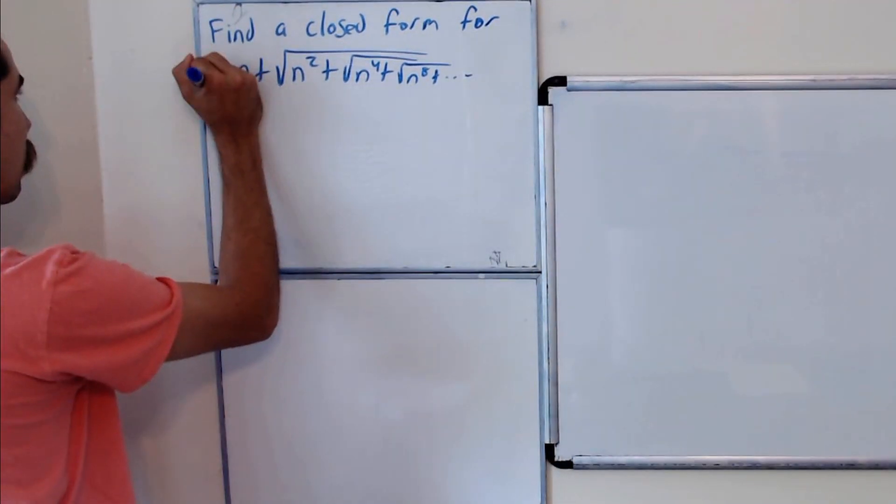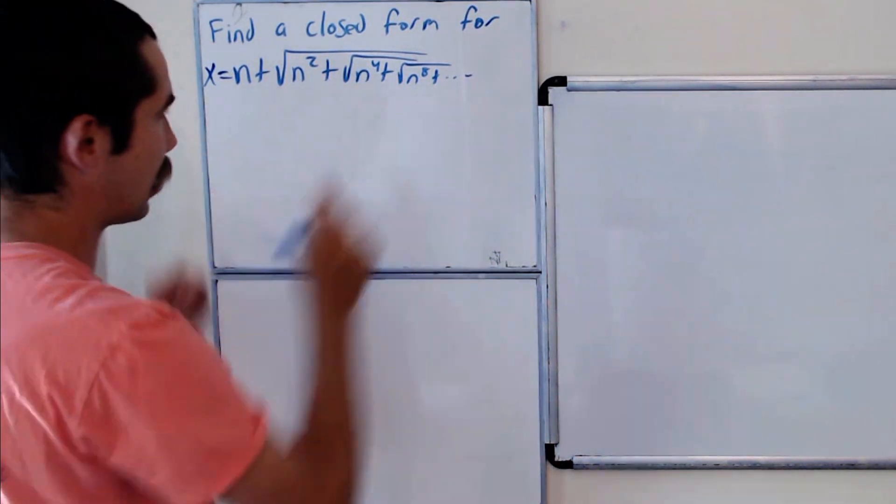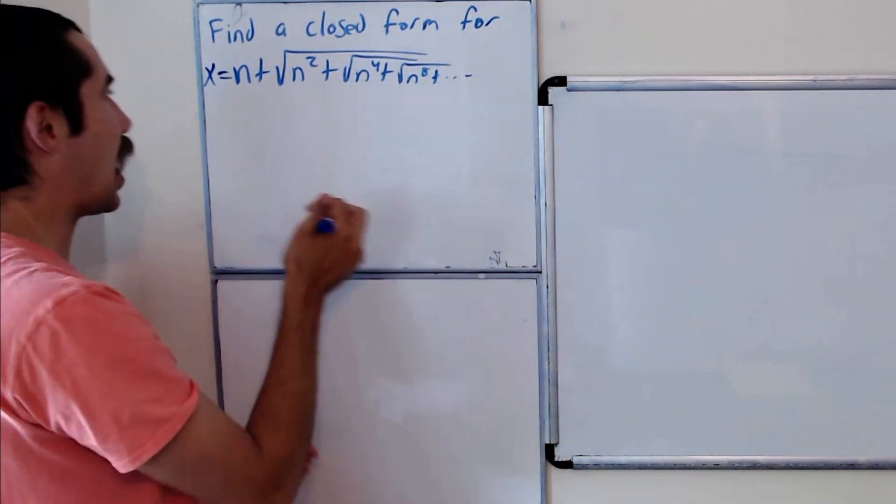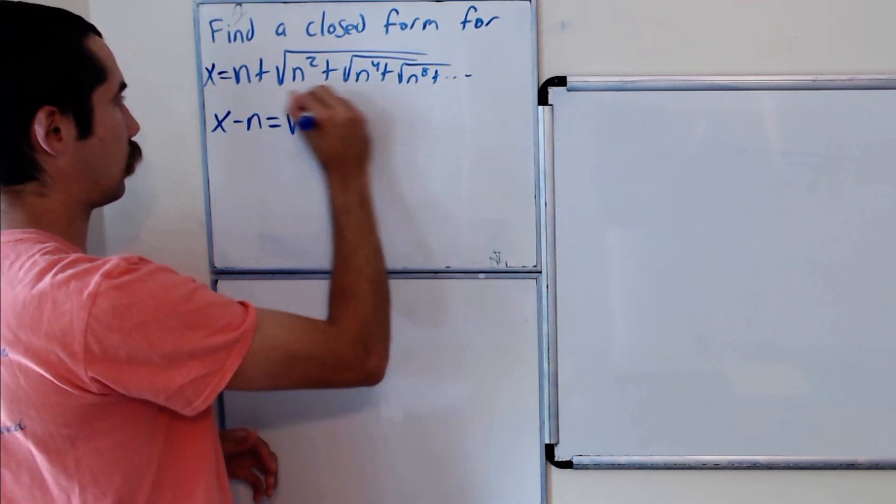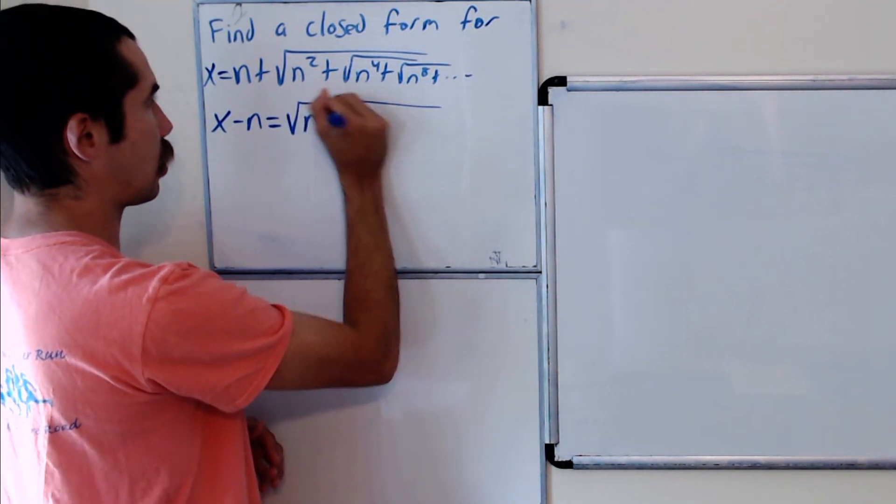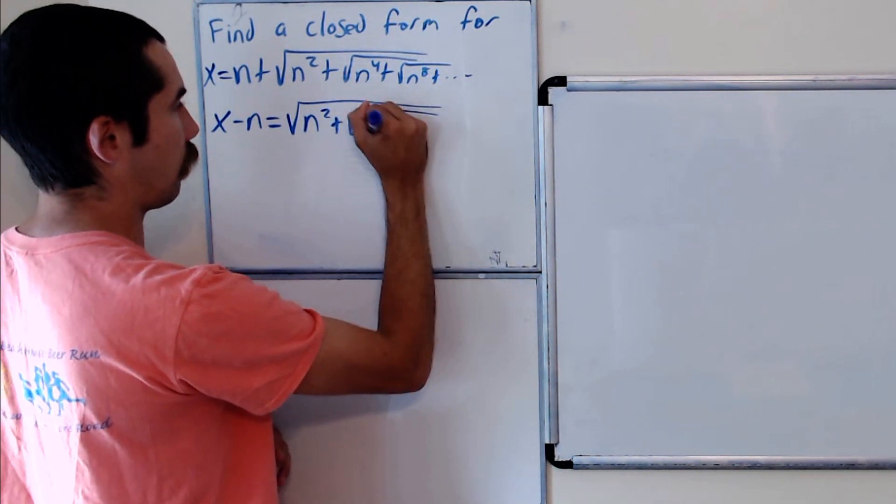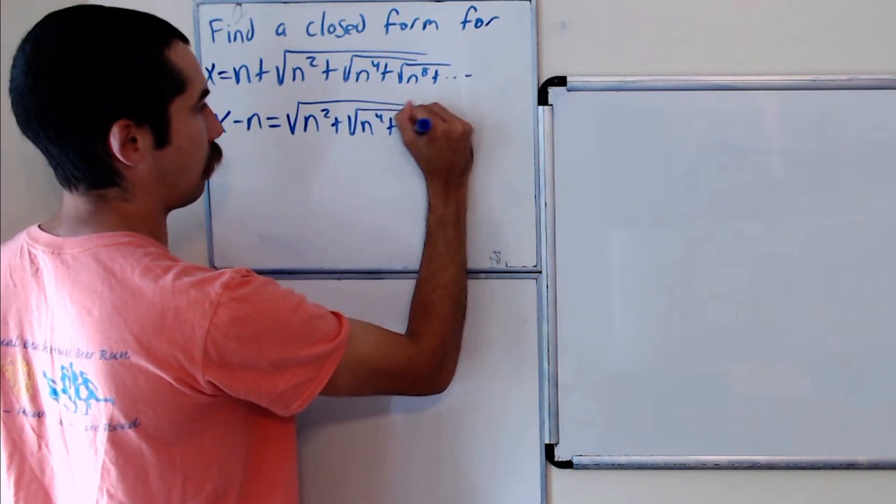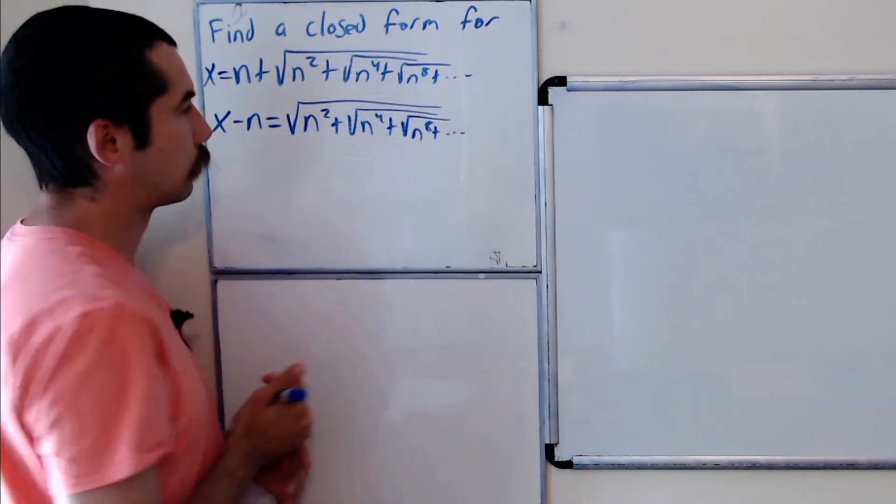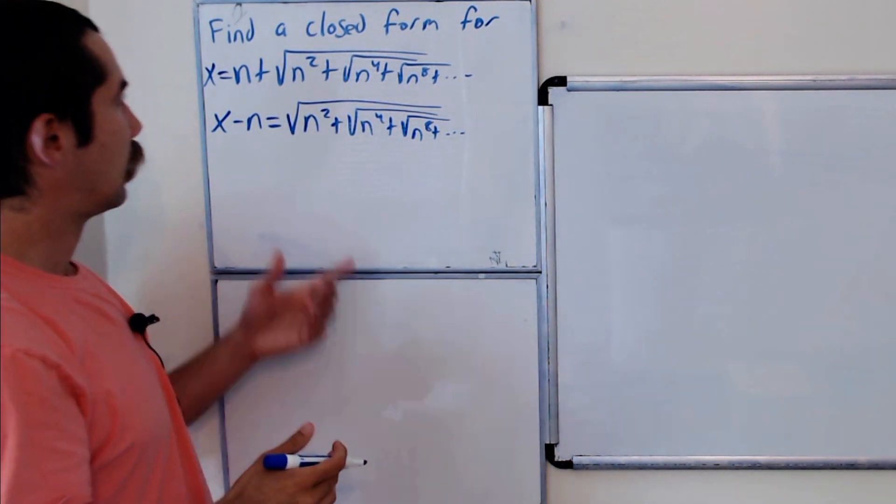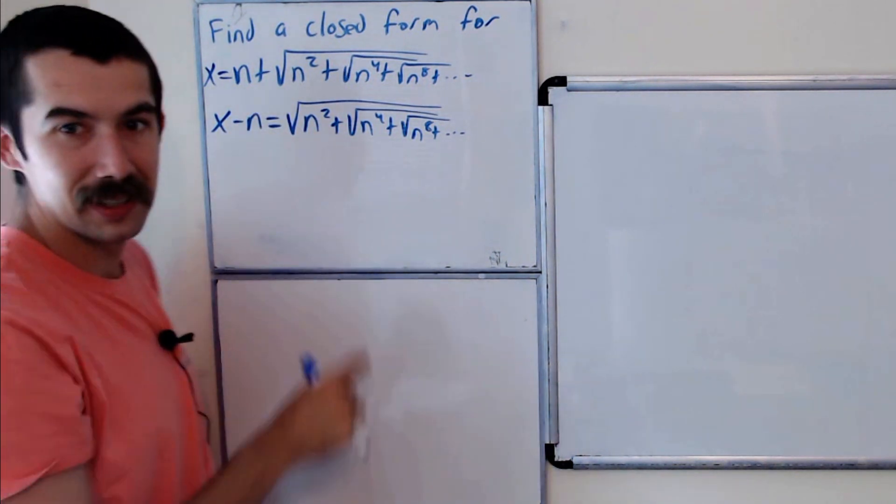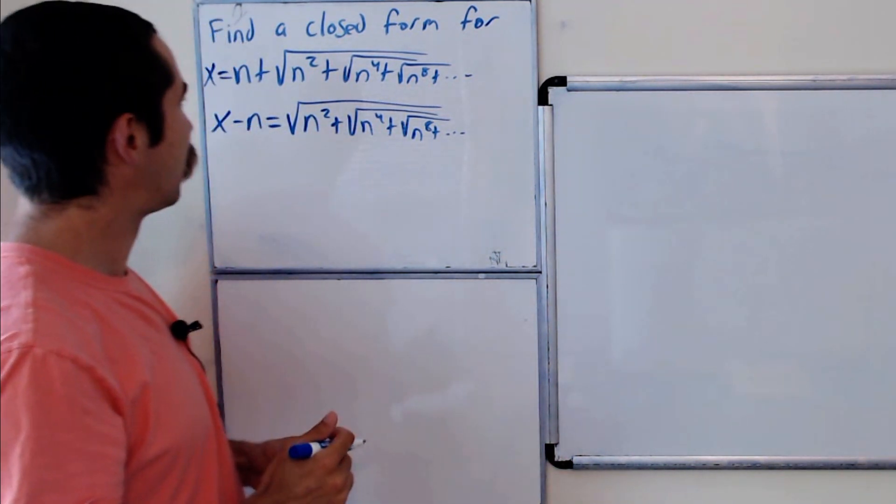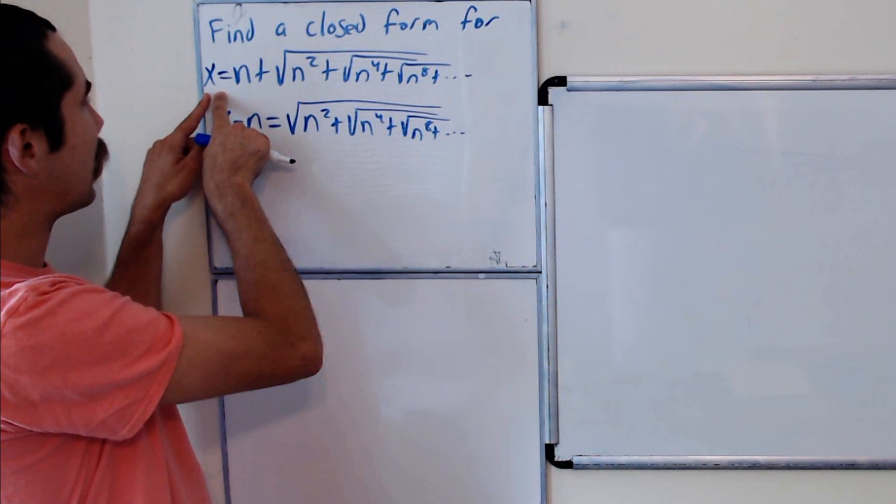So we have x equals this right hand side. And now let's subtract over the n. So x minus n is equal to the square root of n squared plus the square root of n to the fourth plus the square root of n to the eighth and so forth. And so, I mean, we could rewrite this as x equals n plus x minus n, but that's not really going to help. What can we do here?